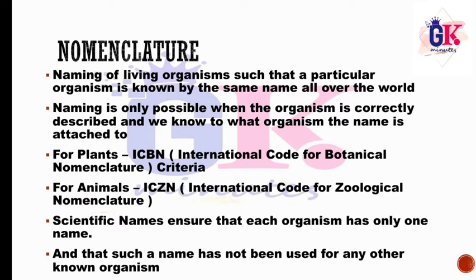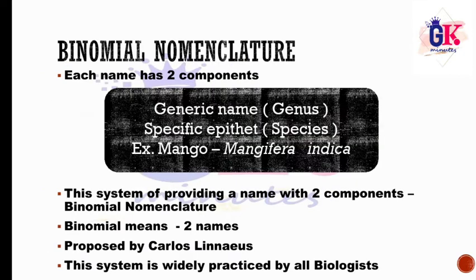This universal naming system is called the International Code for Botanical Nomenclature (ICBN) for plants, and in the case of animals, ICZN — the International Code for Zoological Nomenclature. Scientific names ensure that each organism has only one name, and that name has not been used for any other organism.